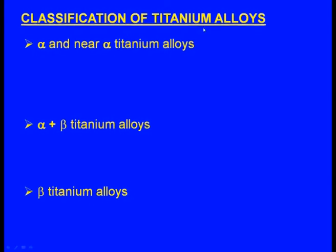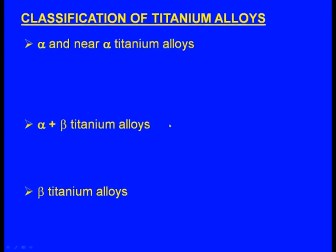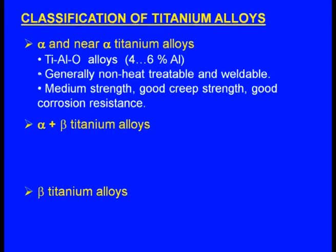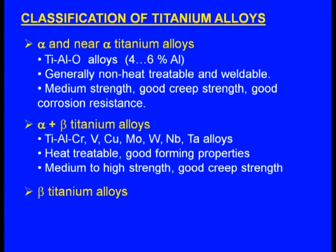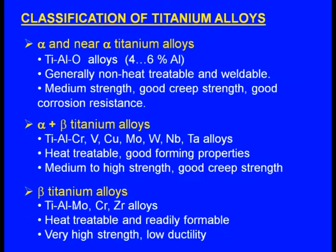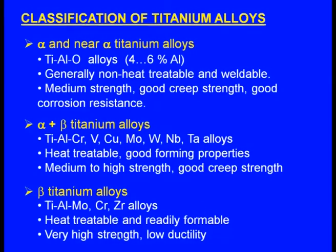Classification of titanium alloys: alpha and near-alpha titanium alloys (titanium-aluminum-oxygen alloys with aluminum content 4 to 6%, generally non-heat-treatable, weldable, medium strength, good corrosion resistance); alpha plus beta titanium alloys (titanium-aluminum-chromium-vanadium-copper-molybdenum-tungsten-tantalum alloys, heat-treatable, good forming properties, medium to high strength); and beta titanium alloys (titanium-aluminum-molybdenum-chromium-zirconium alloys, heat-treatable, readily formable, high strength and low ductility).